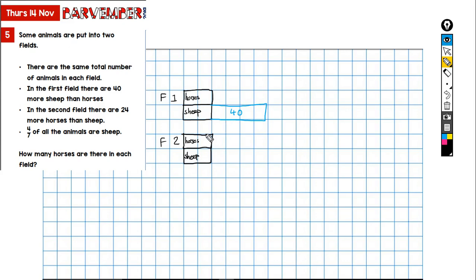Okay, now let me just say that this block is not the same value as this block. It looks like it is. I don't know the value of these blocks. All I know is this block is the same value as this block. Now in the second field there are 24 more horses than sheep, so I'm going to add on an amount for the sheep. I'm going to make it this size because 24 is just over sort of half of the 40, so that's going to be 24.